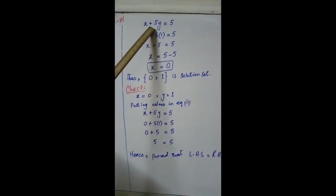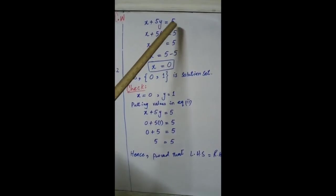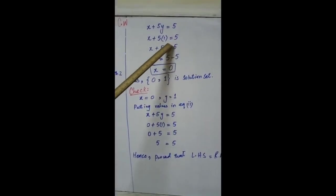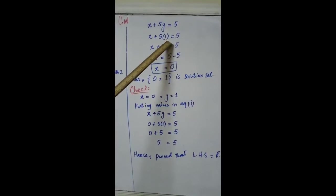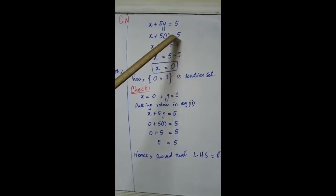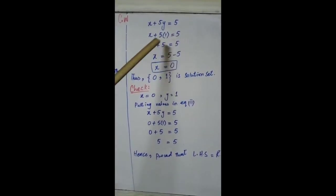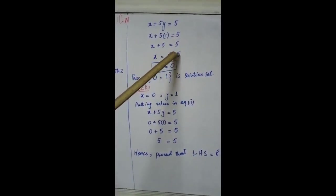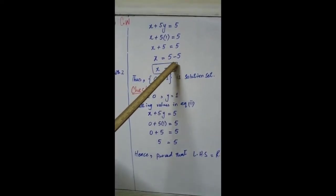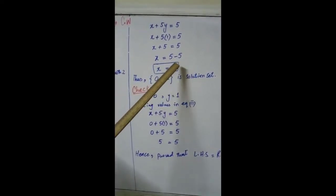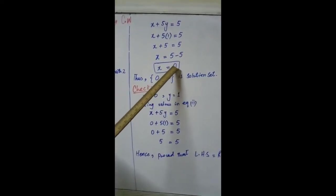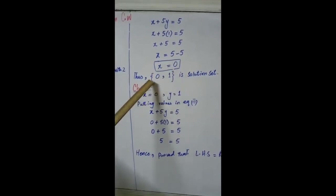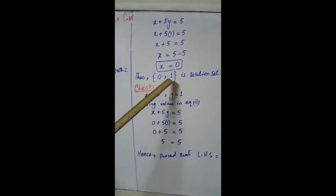By putting the value of y in equation 2: x + 5y = 5 → x + 5(1) = 5, x + 5 = 5, so x = 5 - 5 = 0. Thus, the solution set is {0, 1}.